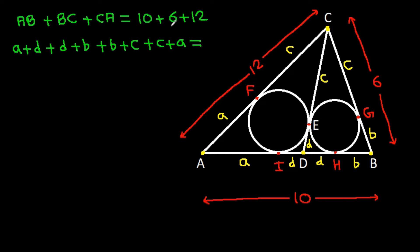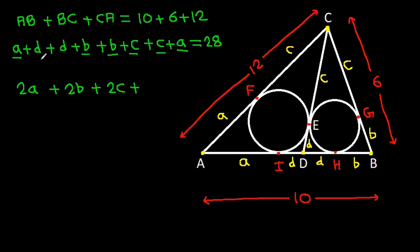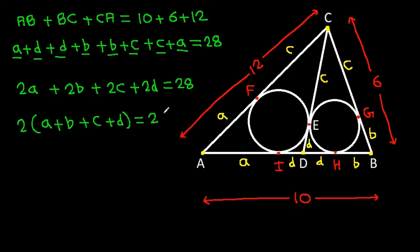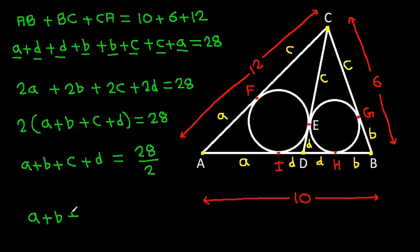Now AB plus BC plus AC is 10 plus 6 plus 12, which equals 28. And the sum of all tangent segments gives 2a plus 2b plus 2c plus 2d equals 28, so two times (a plus b plus c plus d) equals 28, meaning a plus b plus c plus d equals 14.